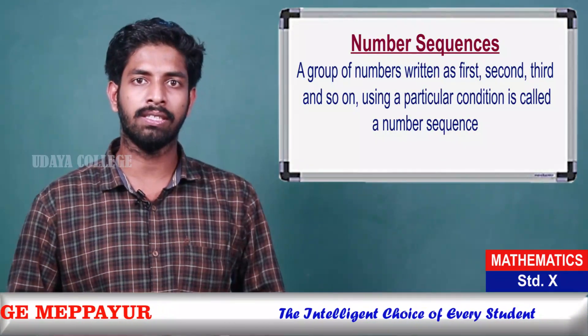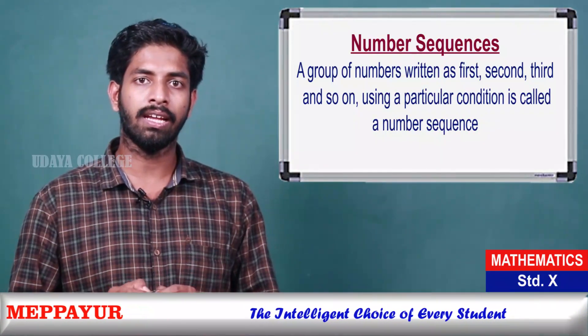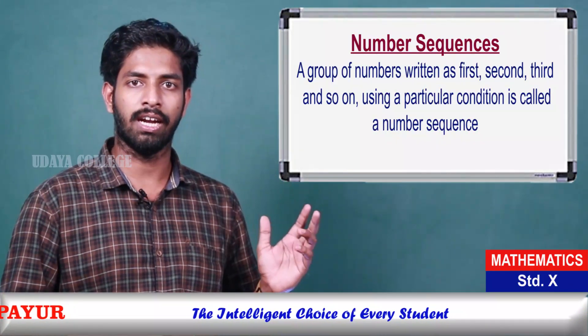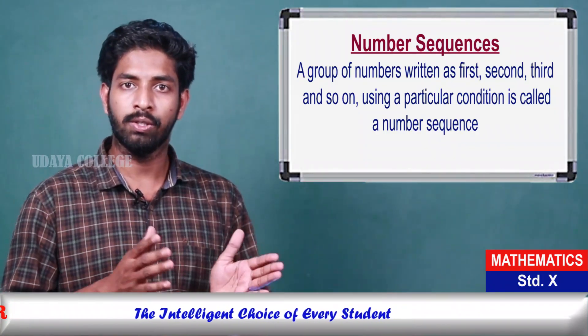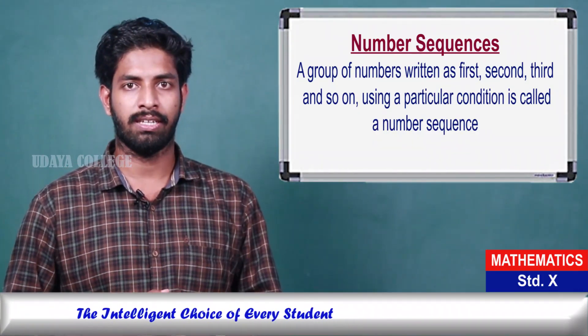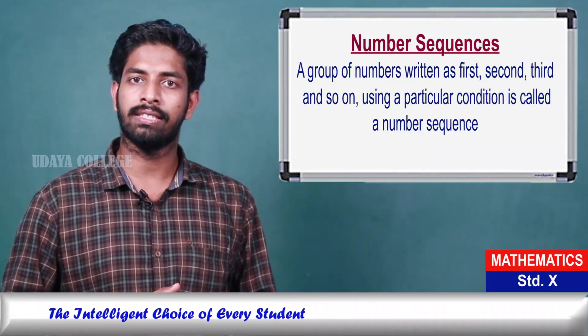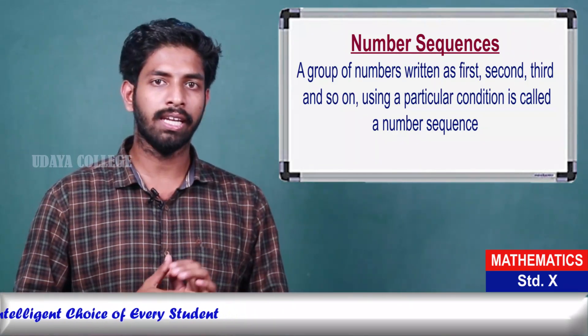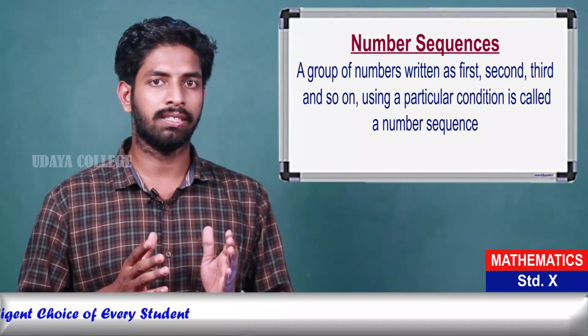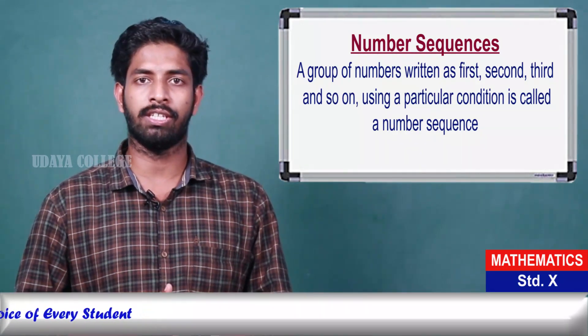A group of numbers written in order — first, second, third, and so on — using a particular condition is called a number sequence. In this class, we will discuss number sequences.